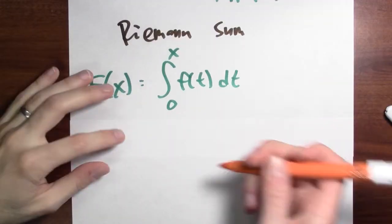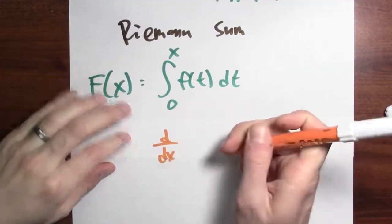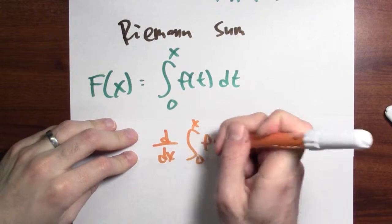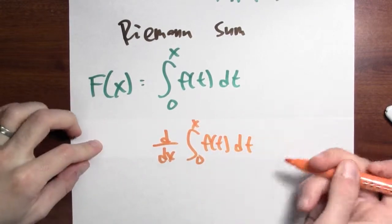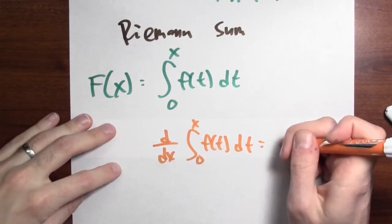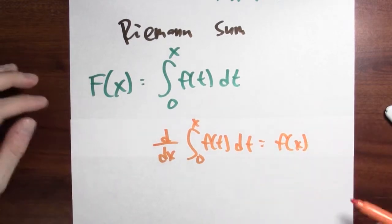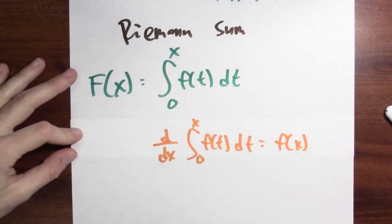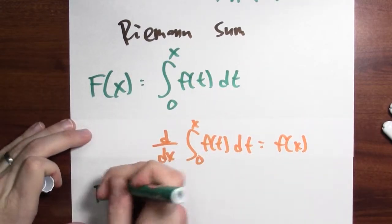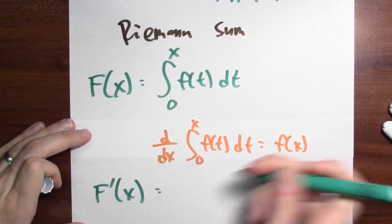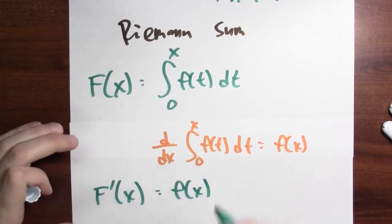And what do I know about accumulation functions? Well, I know that the derivative of the accumulation function, right, is the original function. And that's exactly what I want, right? I mean, this is saying that the derivative of big F is little f.